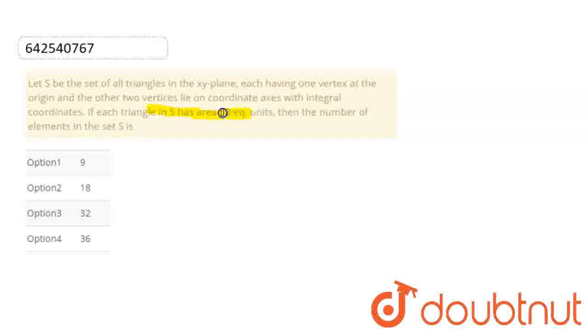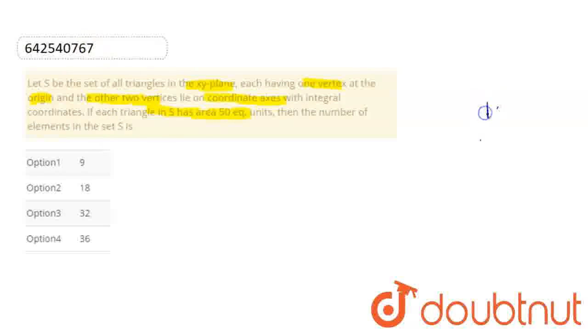The area is given. There is the x-y plane here. It is given that one vertex is at the origin and the other two vertices lie on the coordinate axes. So we have the x-y plane here. Here we can see the triangle at (0,0).